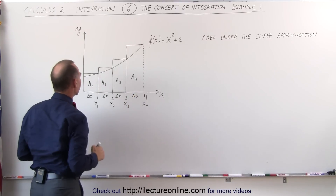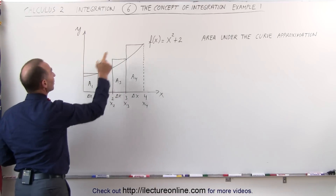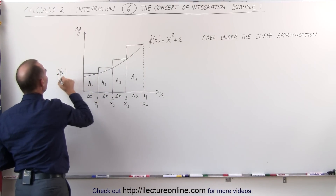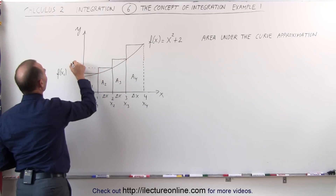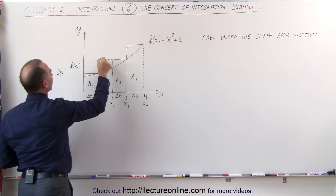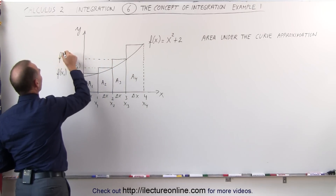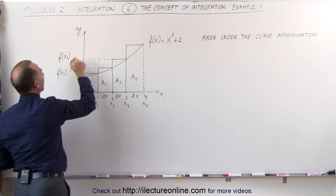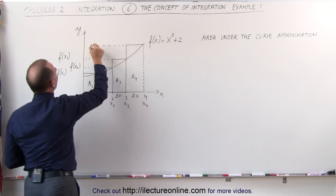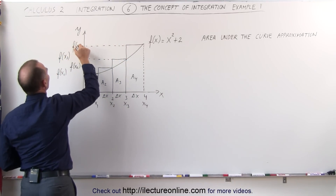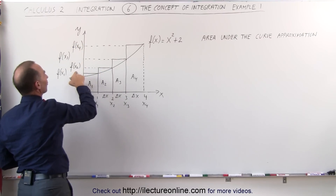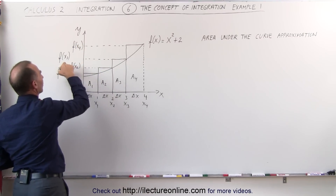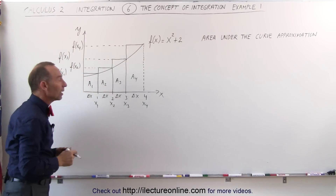The height of each rectangle: the height here will be the function evaluated at x1, the height here will be the function evaluated at x2, over here the height will be the function evaluated at x3, and here it will be the function evaluated at x4. So the heights are f(x1), f(x2), f(x3), and f(x4).